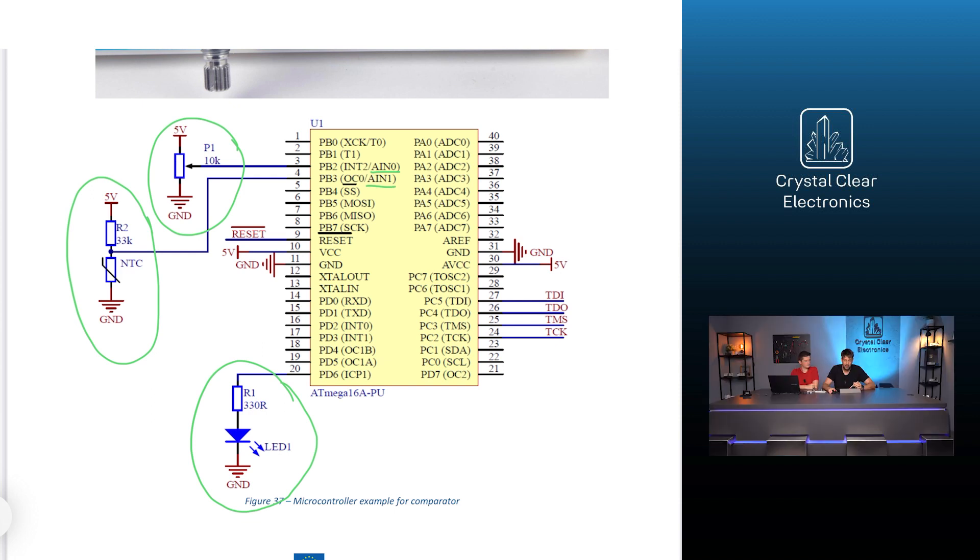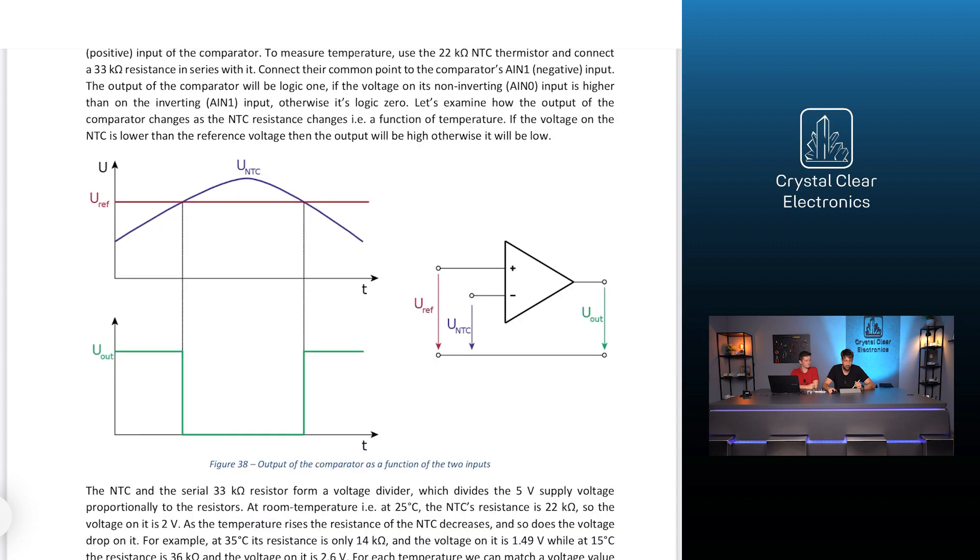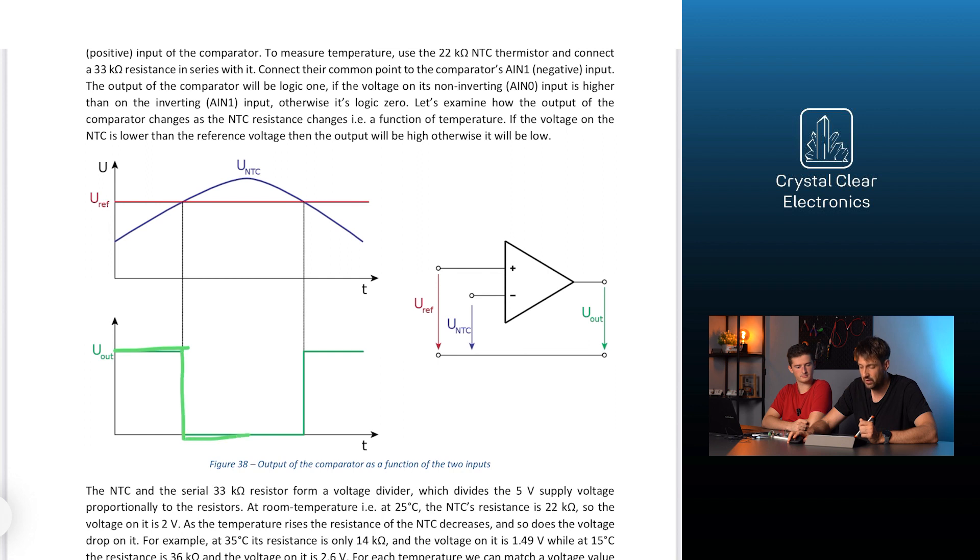The output of the comparator will be logic one if the voltage on its non-inverting input is higher than on the inverting input, otherwise it's logic zero. Let's examine how the output of the comparator changes as the NTC's resistance changes, that is a function of temperature. If the voltage on the NTC is lower than the reference voltage, then the output will be high, otherwise it will be low.